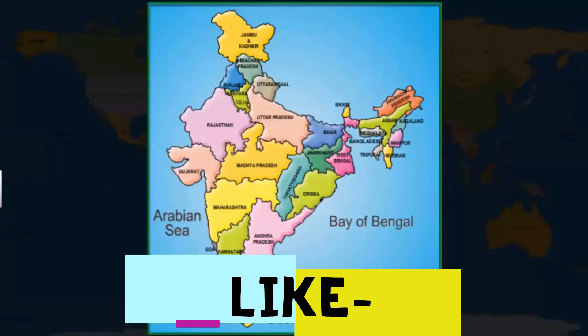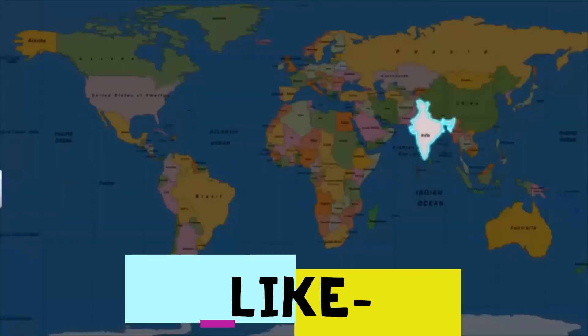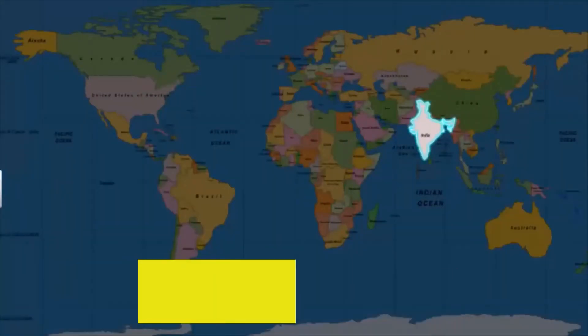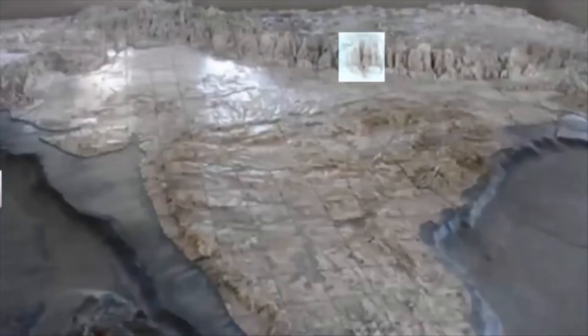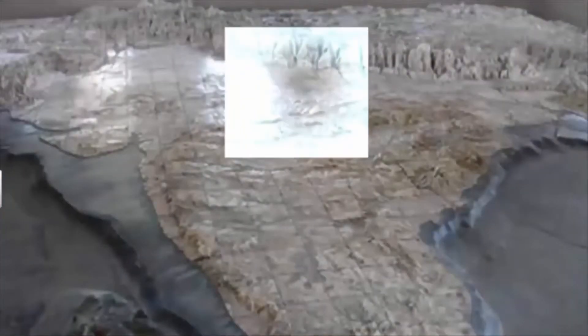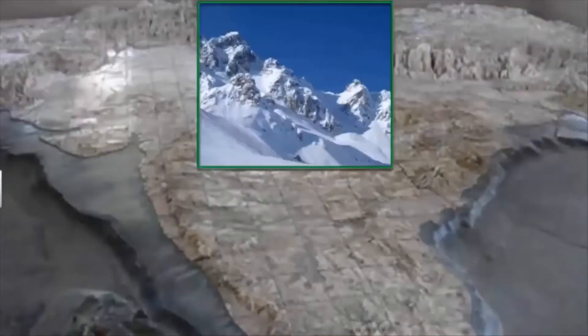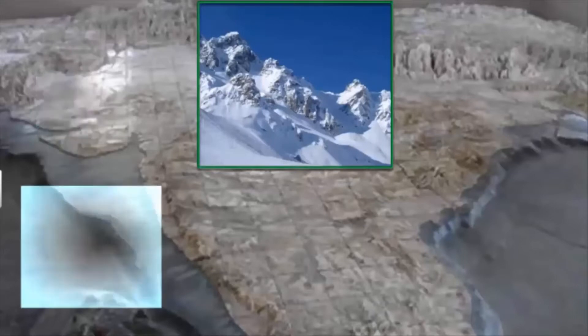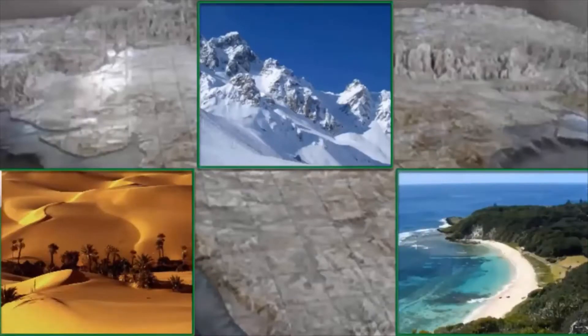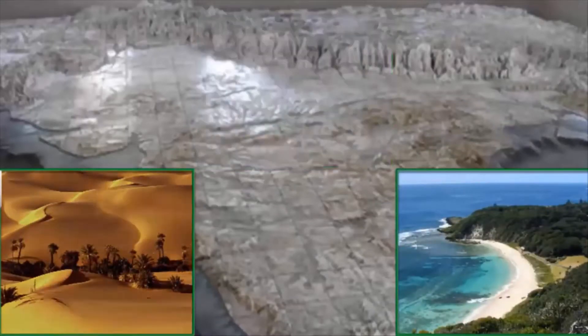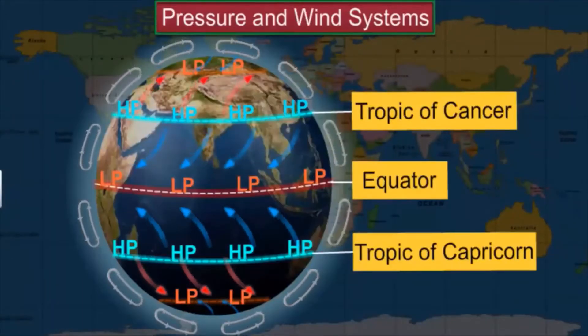India's climate is determined mainly by its location, altitude, relief features, and the pressure and wind systems.